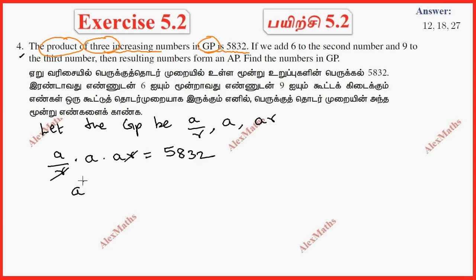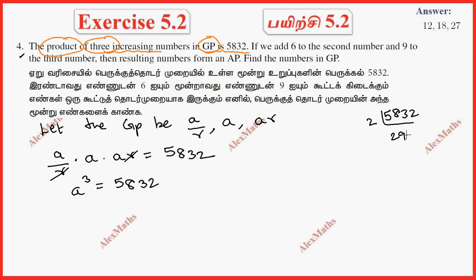The product (A/R) × A × AR equals 5832. The R's cancel out, giving A³ = 5832. Now we factorize to find the value of A.